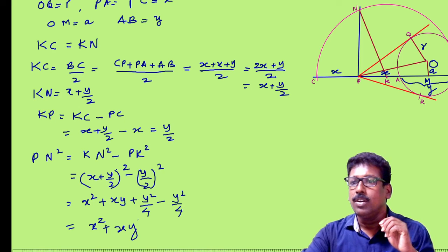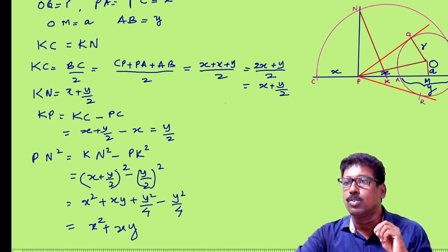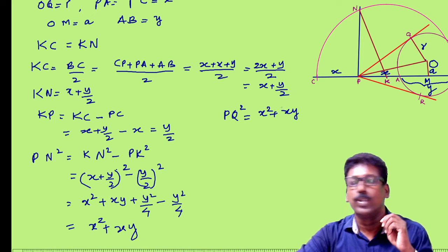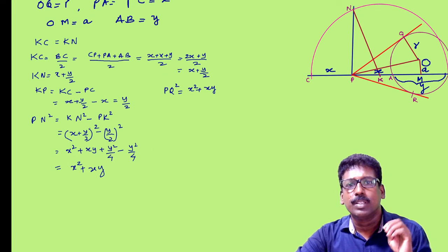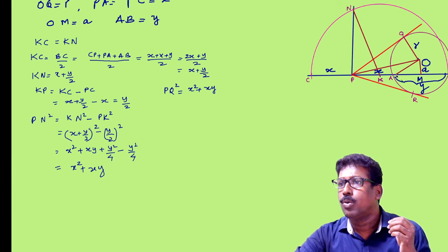So you can write PQ² also the same as PN², that is PQ² = X² + XY. Now let me find out the radius OQ. OQ is equivalent to R.